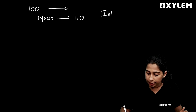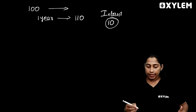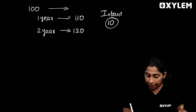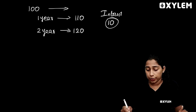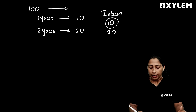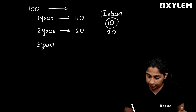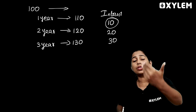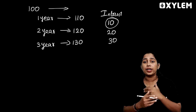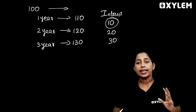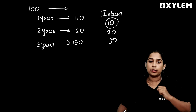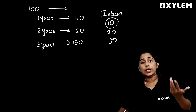Now, what is the interest amount? The interest amount is 10 rupees. Its interest on 100 rupees: 1 year is 10 rupees, 2 years is 20 rupees.